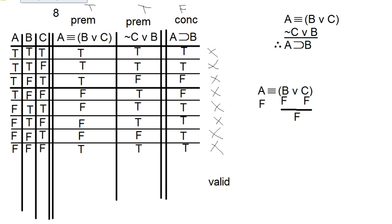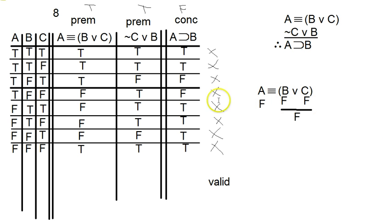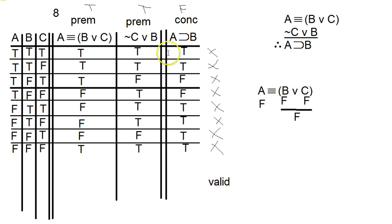I think we're going to call it there. This is kind of a short video, but I hope it gave you some good practice for how to do these problems and what your work is supposed to look like. The scratch paper work I always recommend doing, but it's not part of your answer. Your answer is the truth tables for all the different claims in the argument and then a statement about whether it's valid or invalid. That's all we're doing with symbolic logic except for the translations, which I'll talk about in the next lecture.